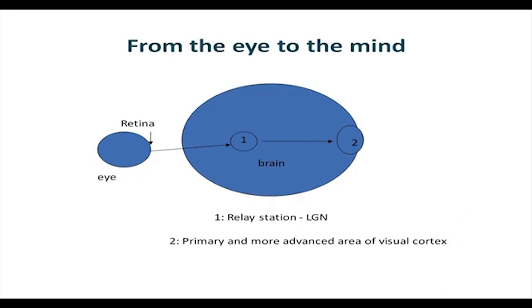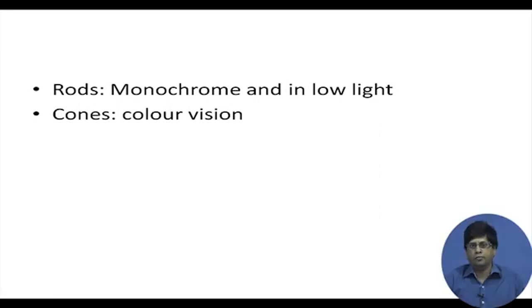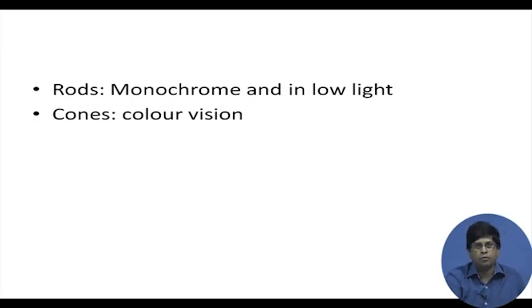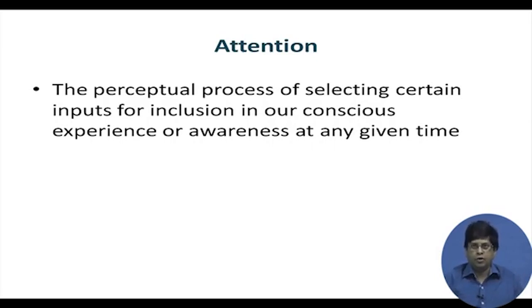The eye sends information to the brain and then to the more advanced part of the visual cortex where processing takes place. We have rods, which are monochrome and activated even in low light, and we have cones which give us color vision. But all of these are about sensations, and at the end of the day what we experience is perception.